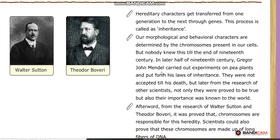Gregor Johann Mendel carried out experiments on the pea plant at the end of the 19th century. His findings were not accepted until he died, but later, from the research of other scientists, not only were they proved to be true, but also their importance was known to the world.